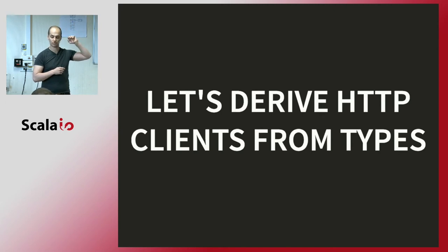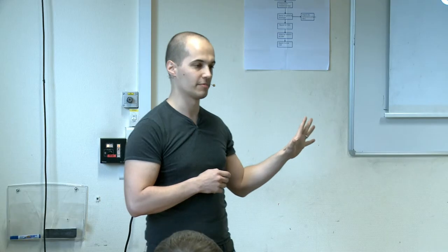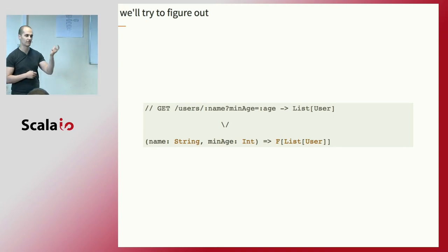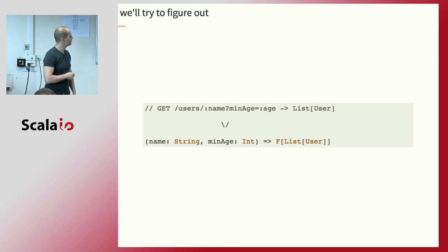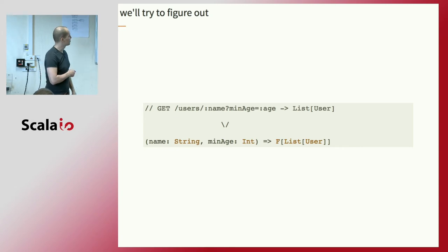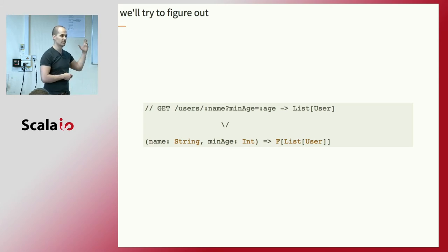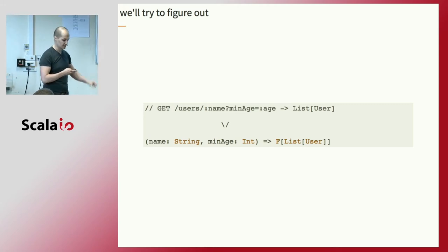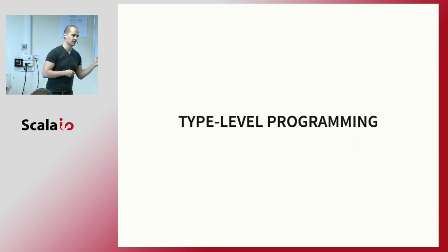Our task today is to write an HTTP client function just from a type. That's what we want to convince the compiler to do for us. Our task looks something like this: we have this endpoint which gets us a list of users depending on a name and some minimum age. We want to somehow represent this endpoint on the type level as a pure type, and the compiler has to find for us a function which takes a name, takes a minimum age, and returns a list of users in some effect context.